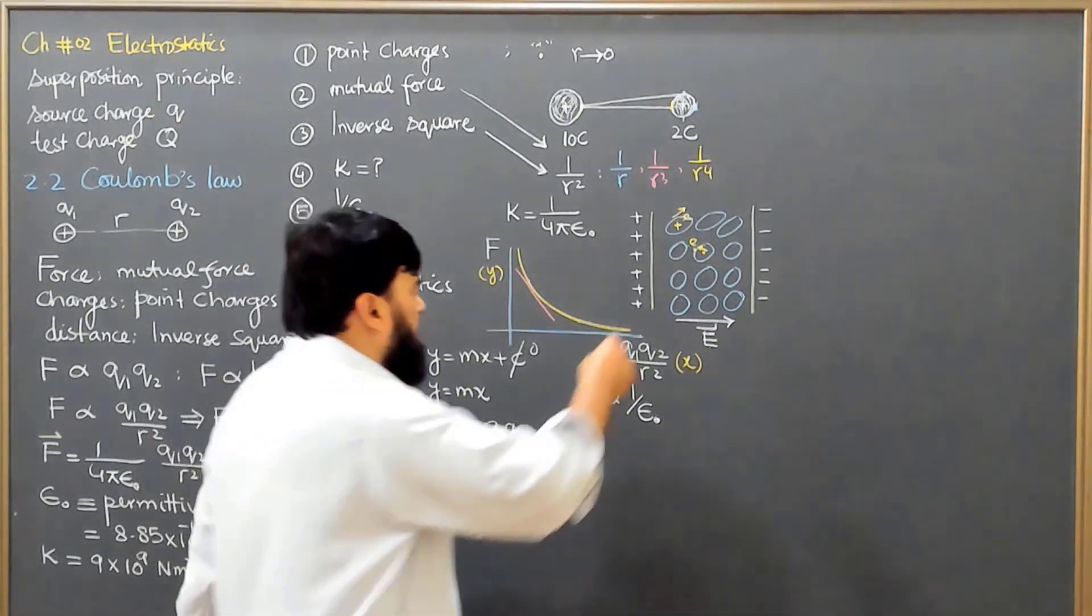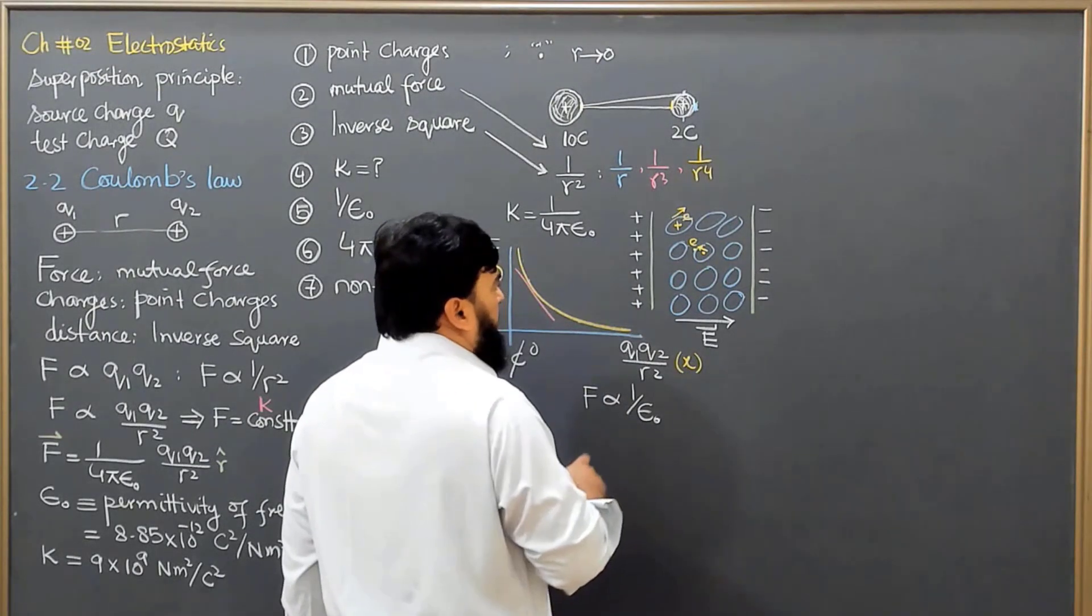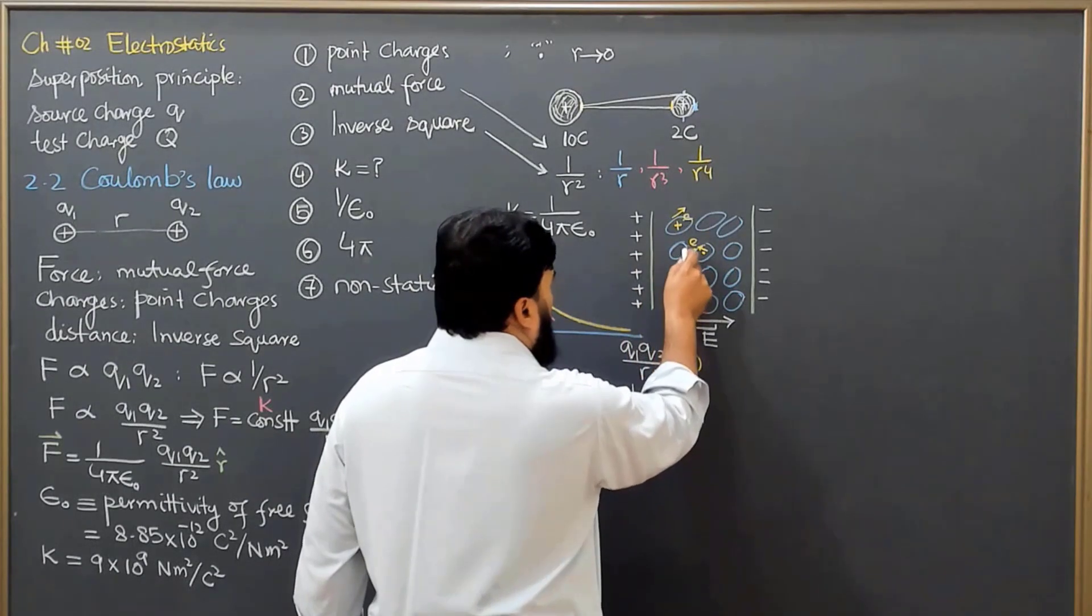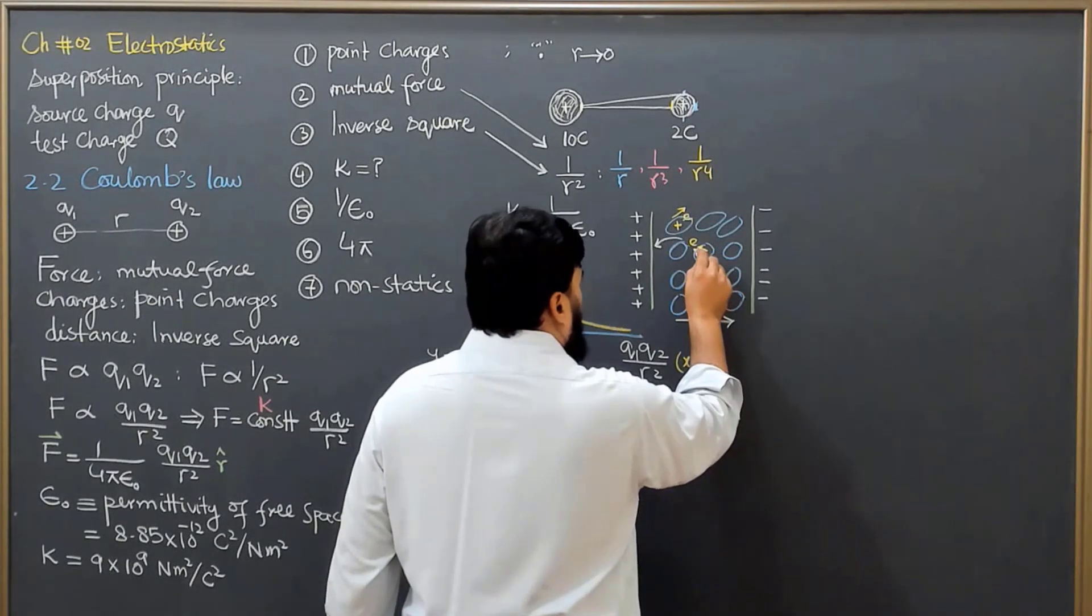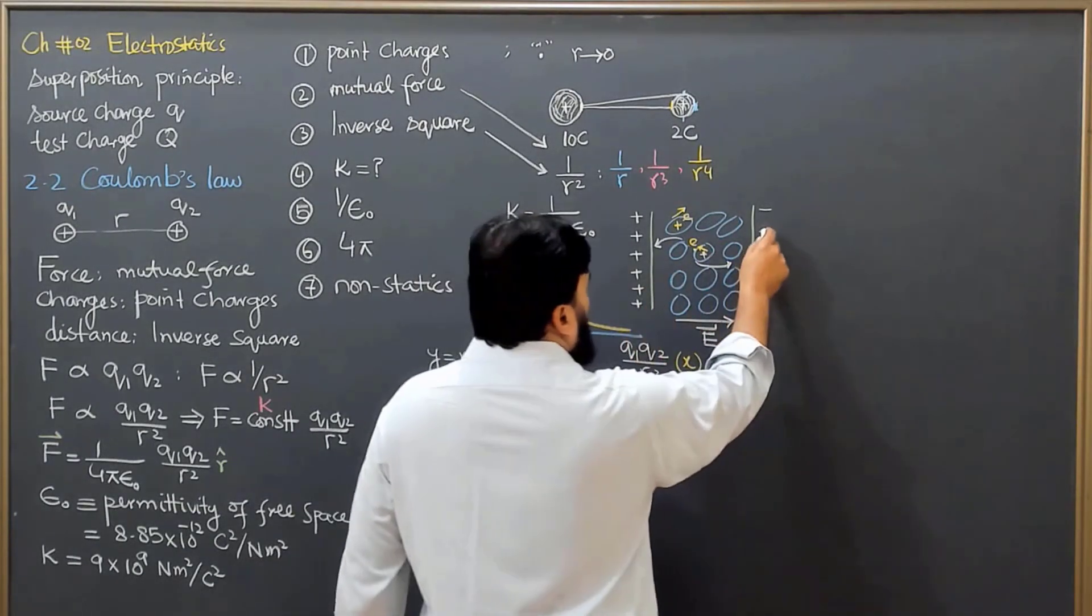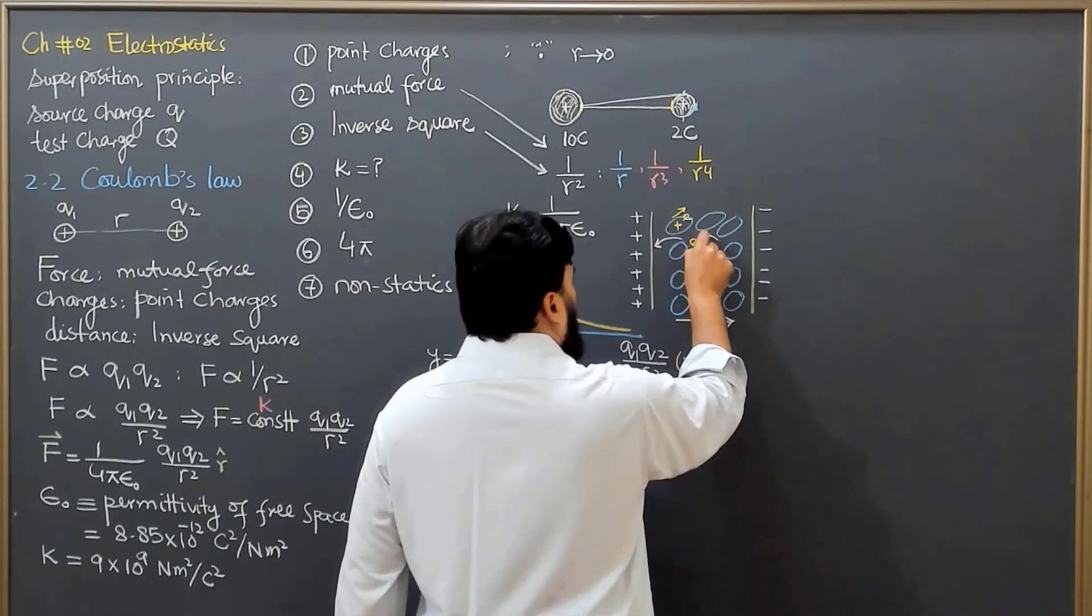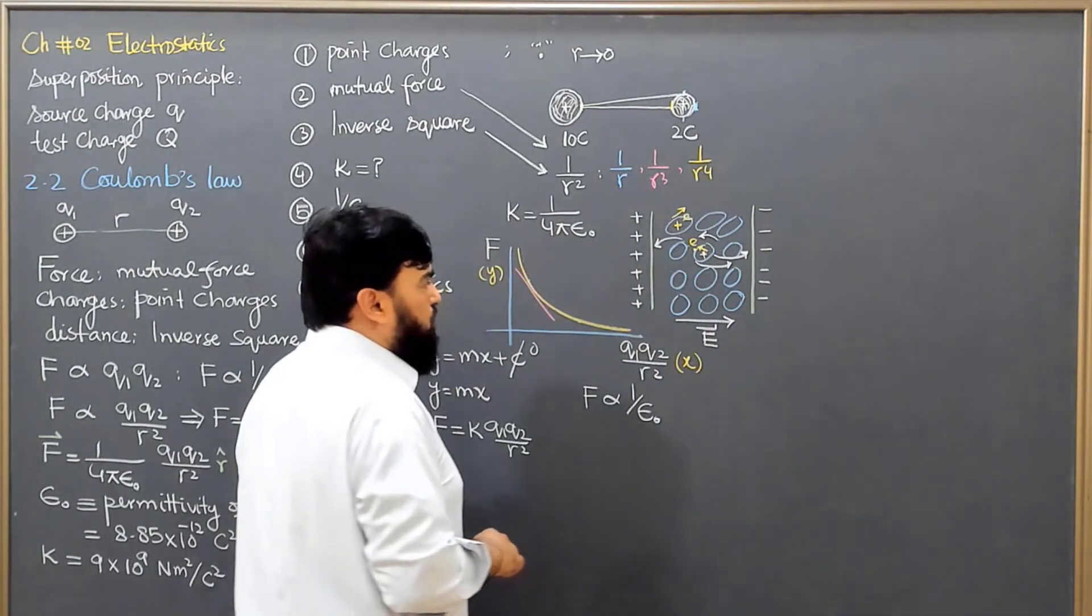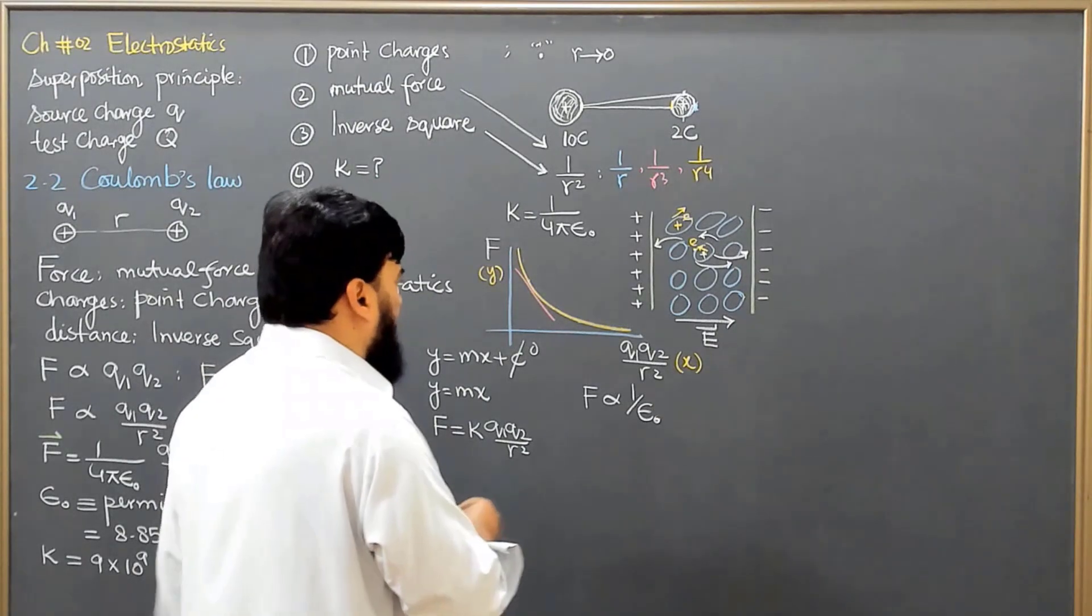When we place this material inside the electric field, what will happen? The positive charge will actually attract the negative charge and repel the positive charge. This positive charge will be repelled. While this negative plate will be repelling the negative charge and attracting the positive charge. So what will happen? We will have a picture something like this.